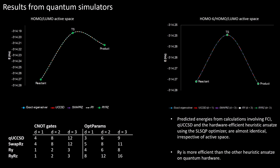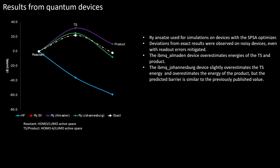Calculations were performed on quantum simulators with various ansatzes and active spaces to determine the most suitable ansatz for calculations that we would like to perform on devices. The energies predicted from calculations involving full CI, UCC-CSD, and the hardware efficient heuristic ansatzes RY, RYRZ, and SWAPRZ using the SLSQP optimizer are almost identical irrespective of active space. Overall, RYRZ is more efficient than the other heuristic ansatzes.